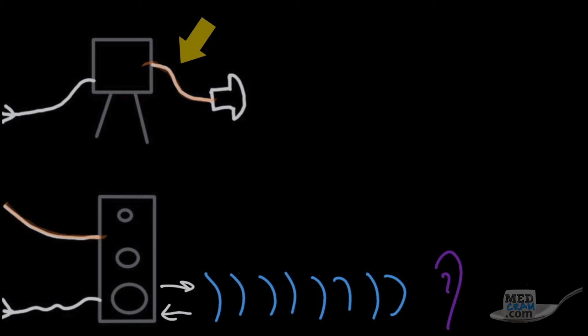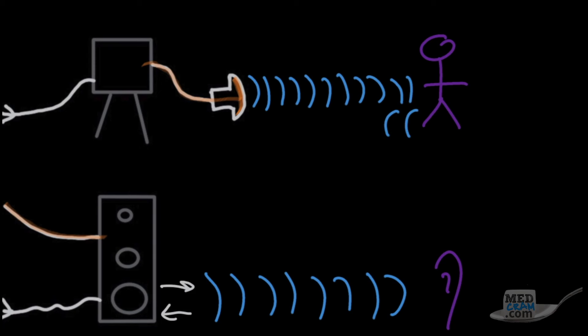Similarly, the ultrasound machine uses electrical energy. The electrical waves generated by the ultrasound machine travel down the transducer cable into the transducer, and the transducer produces sound waves. But in this case, some of these sound waves reflect off of the patient's tissues and are transmitted back to the transducer. The transducer then converts the sound waves that it's receiving back into electrical energy, which is then processed to form a visual image on the ultrasound machine.